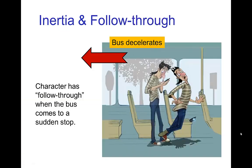A closely related effect is follow-through. If the bus is moving but then comes to a sudden stop — the reverse situation — the bus has decelerated, the character was moving, and then the character continues moving even though the bus has come to a stop. The character continues moving by inertia. The law of inertia says an object in motion remains in uniform motion until acted on by an unbalanced force.